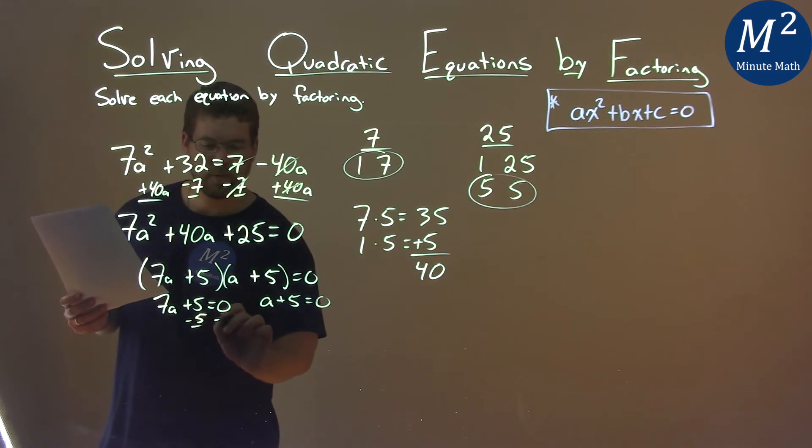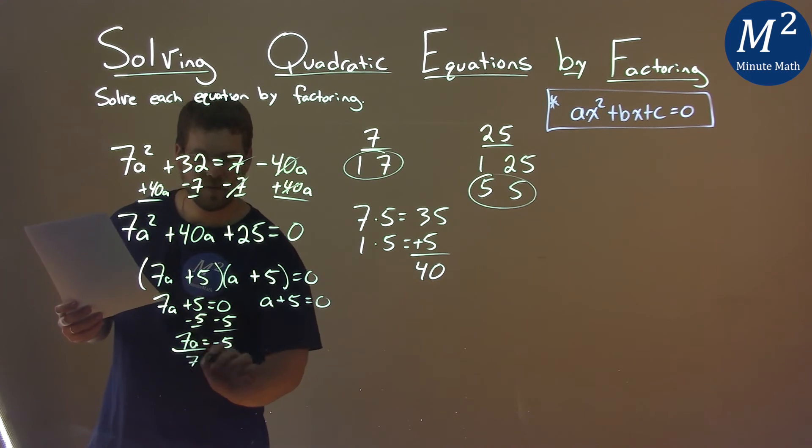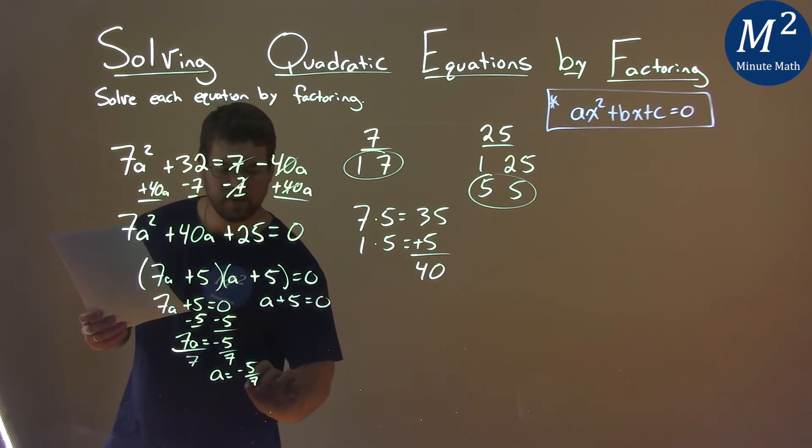Subtract 5 from both sides: 7a equals negative 5. Divide both sides by 7, and a equals negative 5/7.